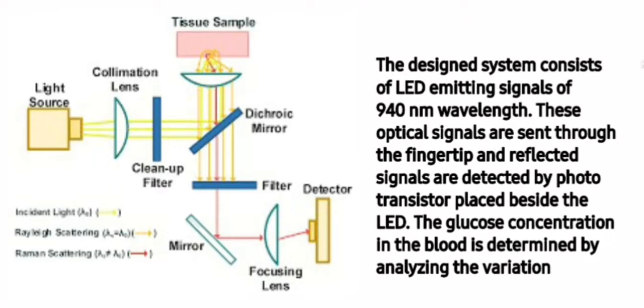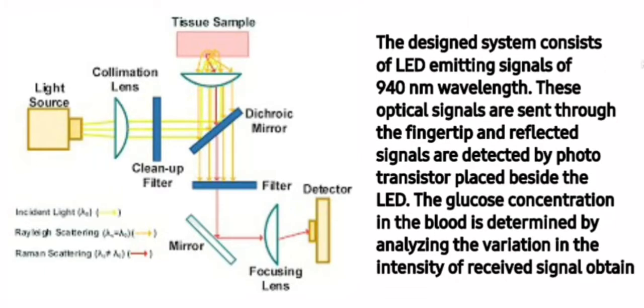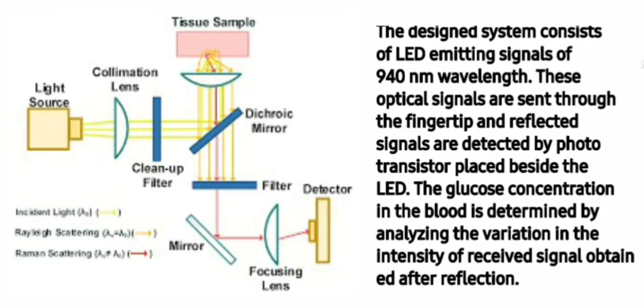The reflected signals are detected by a phototransistor placed just beside the LED. Now the glucose concentration in the blood is determined by analyzing the variation in the intensity of received signals obtained after reflection.